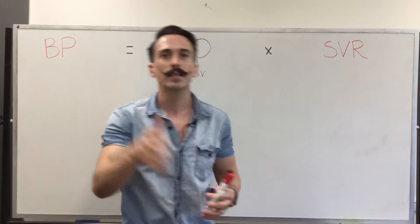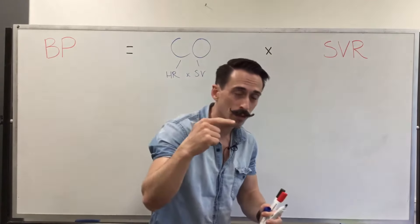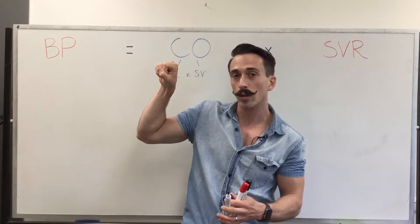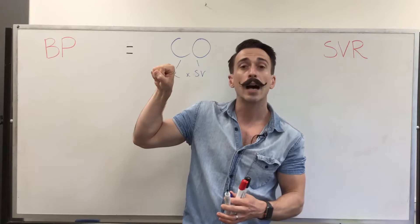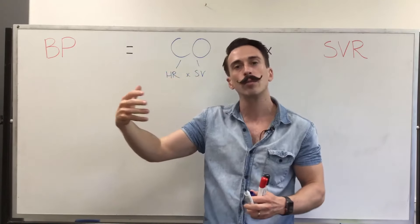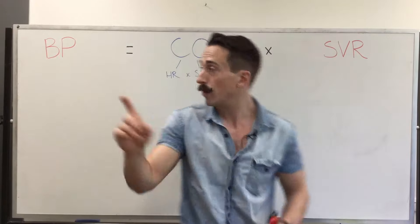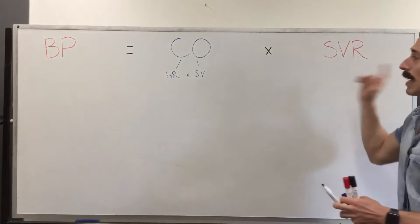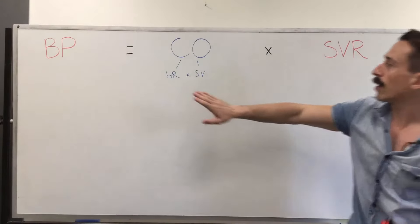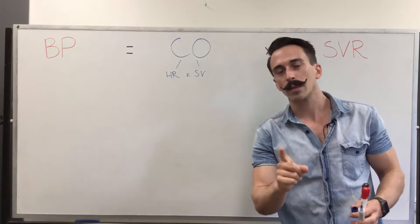SVR is systemic vascular resistance — how much resistance the blood is experiencing as it moves through the blood vessels. If a blood vessel constricts and narrows the lumen, the diameter reduces and it's harder for blood to move through, so systemic vascular resistance goes up. If a blood vessel dilates, it's easier for blood to move through and SVR decreases. So when we look at shock, a decrease in blood pressure is because something's happening with either heart rate, stroke volume, or systemic vascular resistance.